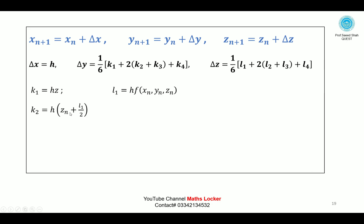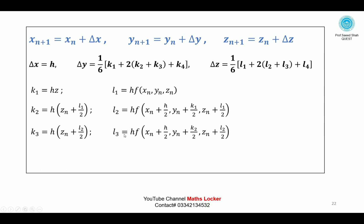k₂ = h·(zₙ + l₁/2). k₃ = h·(zₙ + l₂/2). l₃ = h·f(xₙ + h/2, yₙ + k₂/2, zₙ + l₂/2). k₄ = h·(zₙ + l₃). l₄ = h·f(xₙ + h, yₙ + k₃, zₙ + l₃).